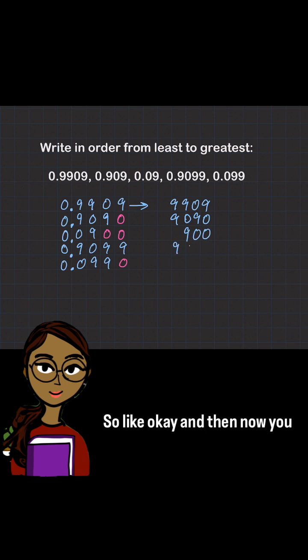And then now you just order these numbers from least to greatest. So obviously here, 900 is the smallest, and then 990, 9,090, and then the 9,099, and then the last one, 9,909.